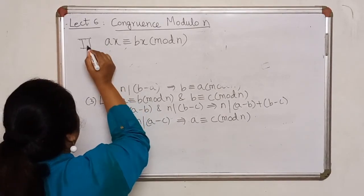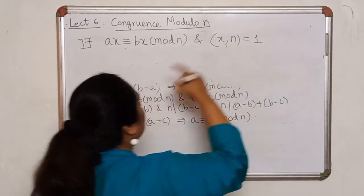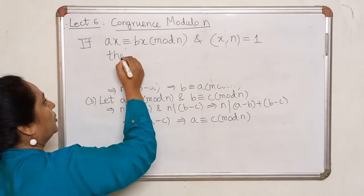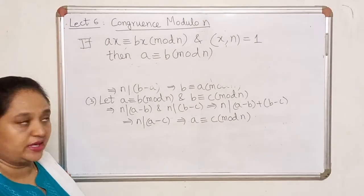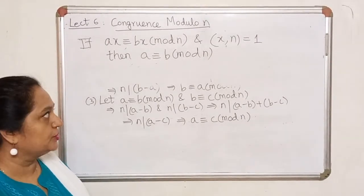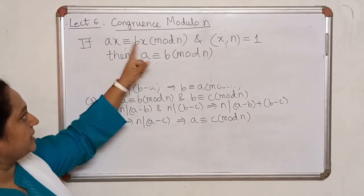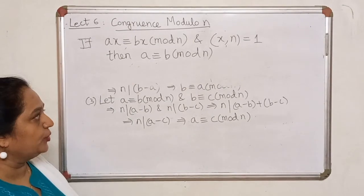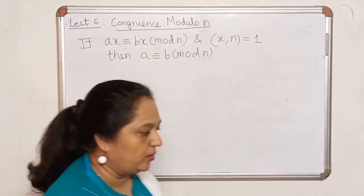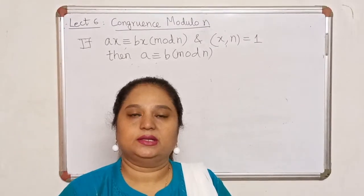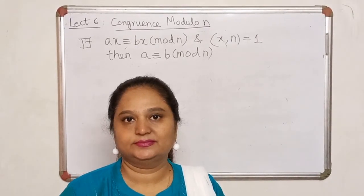Cancellation is valid under one specific condition: if ax ≡ bx (mod n) and gcd(x, n) = 1 — that is, x and n are relatively prime — then you can cancel x from both sides and conclude a ≡ b (mod n). In the earlier example, I cancelled 4 from both sides but gcd(4, 2) ≠ 1, so the property did not apply. This is the only place where you need to be careful. In our next lecture we will start with relations.